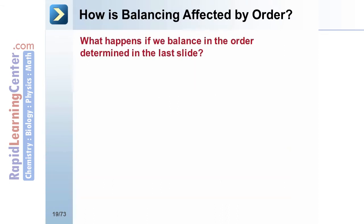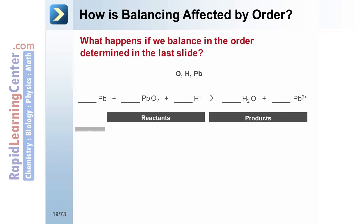How does balancing order affect the outcome? According to the suggestion in the previous slide, this equation should be balanced beginning with oxygen, then hydrogen, and saving lead until the end. First, a table of elements is made. The number of atoms on each side of the reaction is determined and added to the table.